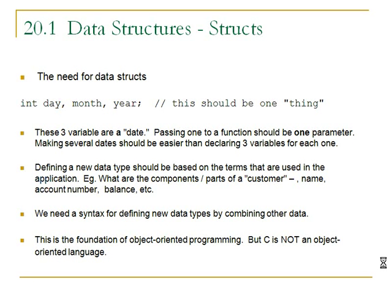We're going to put things together making one thing. I don't want to call it an object because that word is reserved for discussions of object-oriented programming, but we are going to associate component parts into one thing. Creating structs in C, there are different approaches, and I want to keep them separate by giving them a name. We're going to have approach one, two, and three.